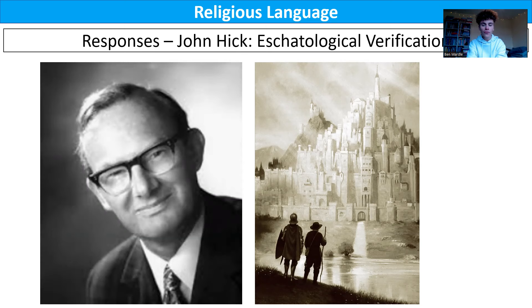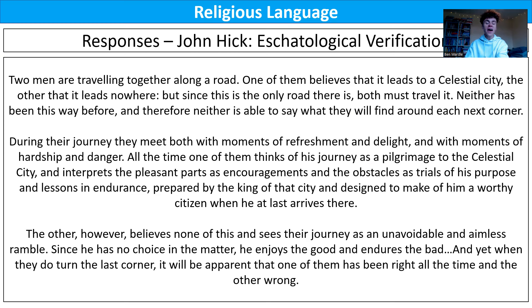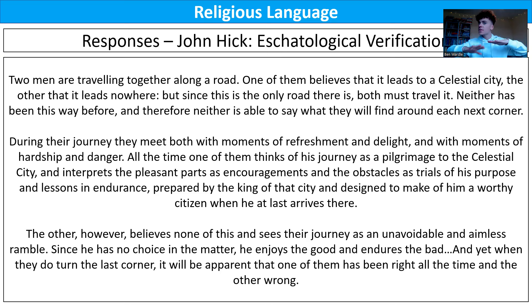Two men are travelling together along a road. One of them believes it leads to a celestial city; the other believes it leads to nowhere. Since this is the only road there is, both must travel it. Neither has been this way before, so neither is able to say what they will find around the next corner. The celestial city represents heaven; the traveller who believes there is a city is the theist who believes in heaven and God; the traveller who believes there is no city is the atheist who does not believe in God. They're both on the same path — life in this world.